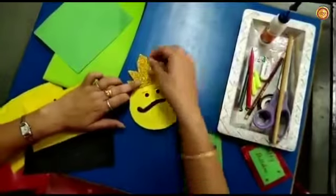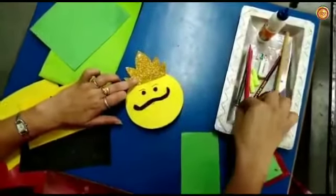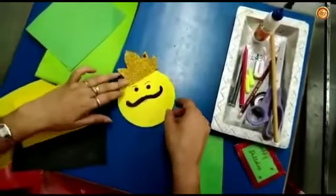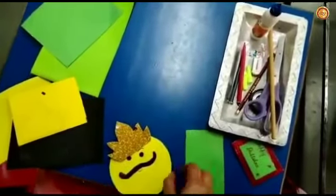Now you can decorate the crown with colored stones. In this way, your Ravan's face will be ready in this form.